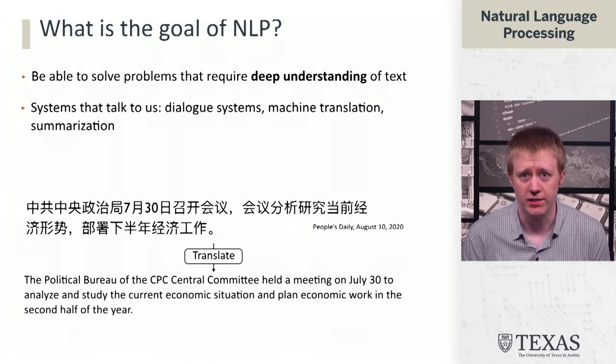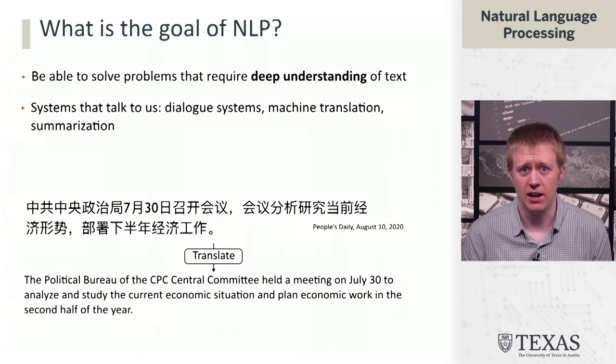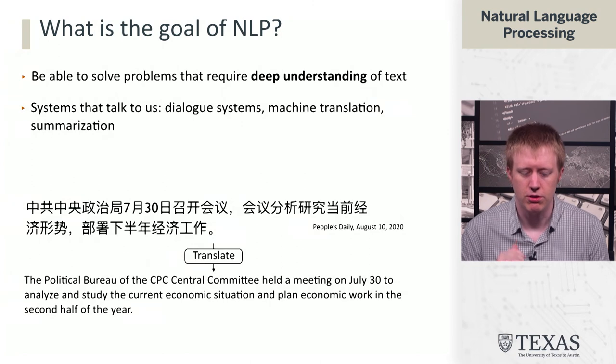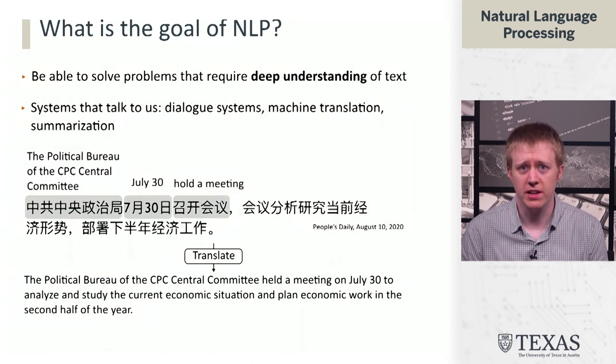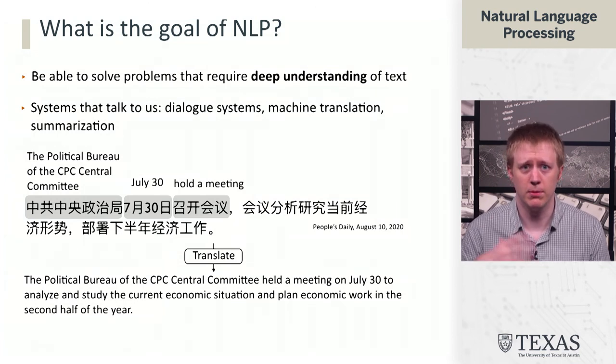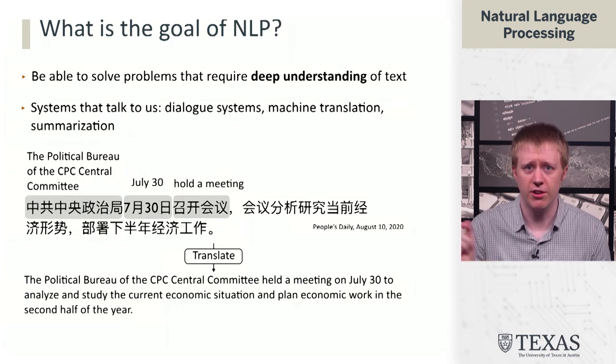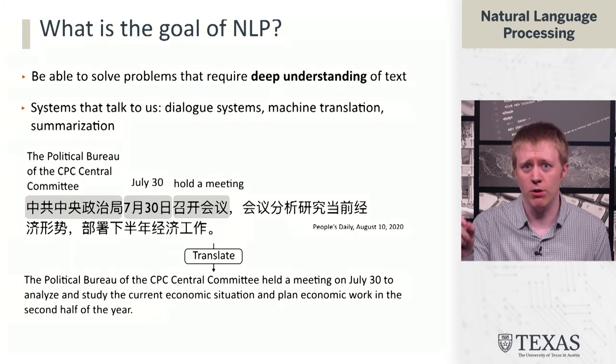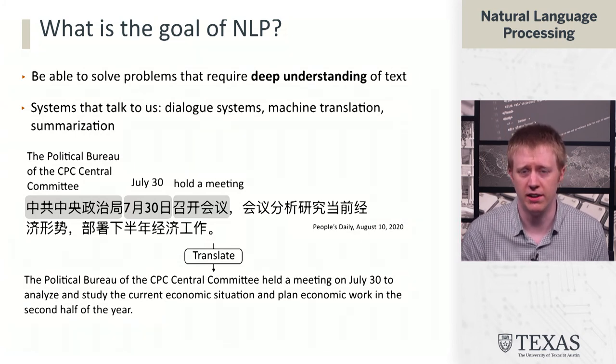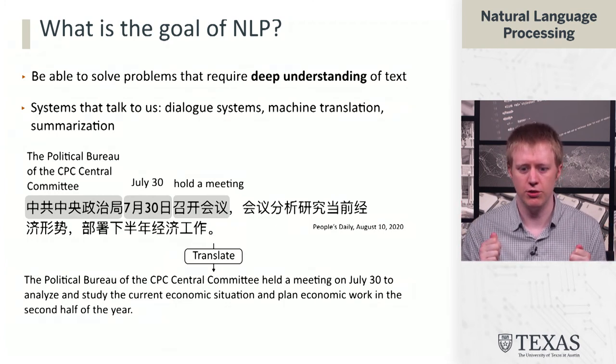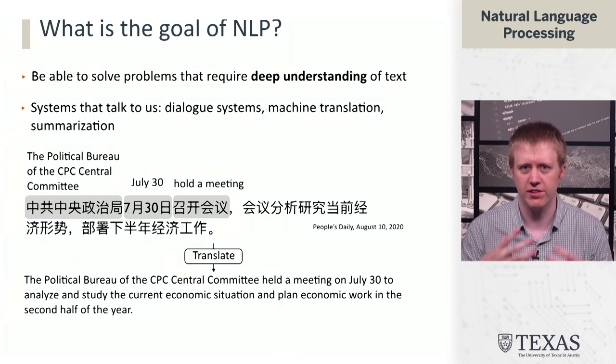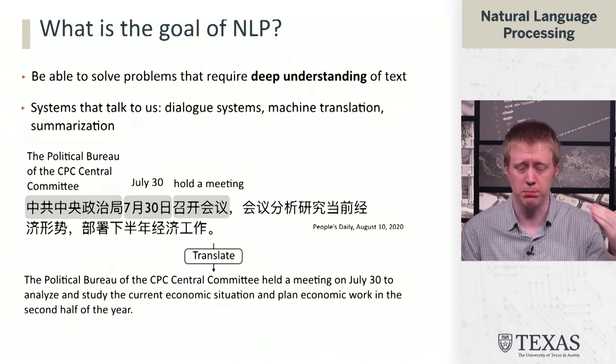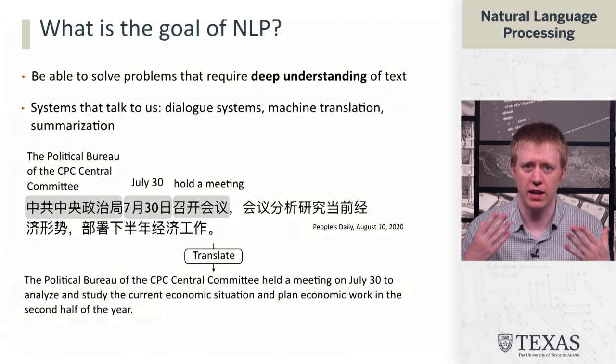Translation is another great example of this. Here's a sentence in Chinese and a corresponding translation from Google Translate. The interesting thing here is that you cannot just go along and translate this sentence word by word. In particular, in the first chunk here, 'the political bureau of the CPC Central Committee,' followed by 'July 30th,' followed by 'hold a meeting' in Chinese, that's out of order with respect to how it's ordered on the English side. In this translation process, we actually need to look at the syntactic structure here, understand the concepts being communicated, and be able to render them in the right surface order. We can't just apply a dictionary word by word. We need this deep understanding here.